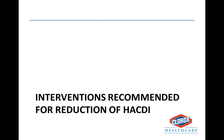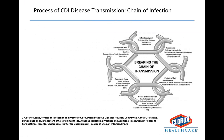In terms of interventions recommended for reduction of hospital-acquired C. difficile, we want to break the chain of transmission. One key intervention is hand hygiene compliance, though studies show compliance is always on the low end, ranging anywhere from the low 30s to the high 90s due to variable factors. Contact precautions is another piece of the puzzle as a strategy to reduce C. difficile transmission.